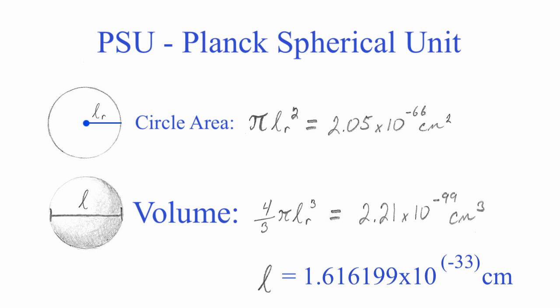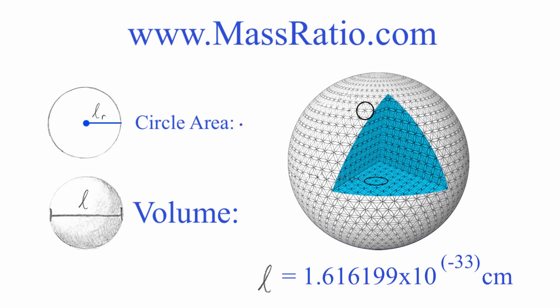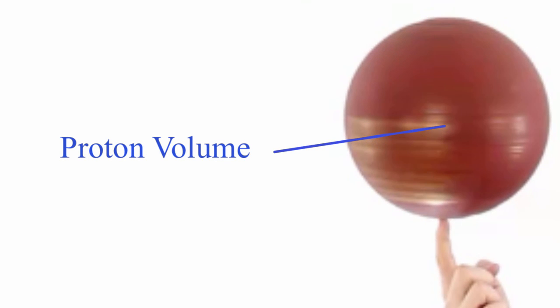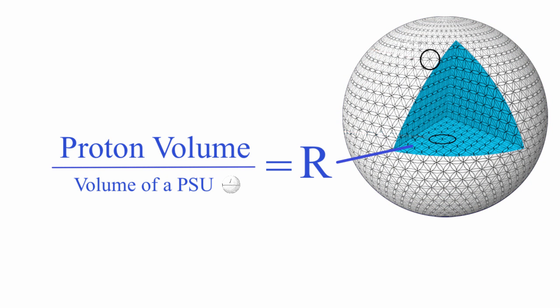Okay. Good. Now we can use this information to find the mass ratio. Pretend this basketball is a spinning proton. Now, if we take the volume of a proton and we divide it by the volume of a PSU, we get R, or the number of PSUs within the proton.